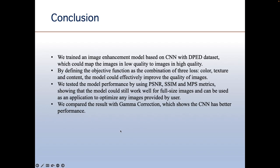And to conclude our project, we trained an image enhancement model based on CNN with DPED dataset, which could map the images in low quality to images in high quality. And by defining the objective function as a combination of three losses - color, texture, and content - the model could effectively improve the quality of images. We also test the model performance with three metrics, showing that the model could still work well for full-size images. And we compare the result with gamma correction, which shows that the CNN could perform better.